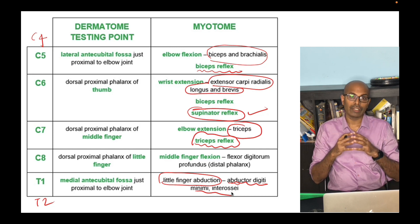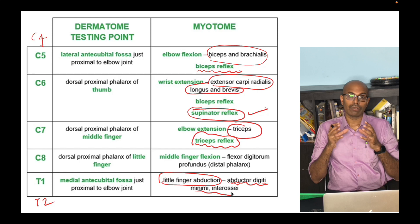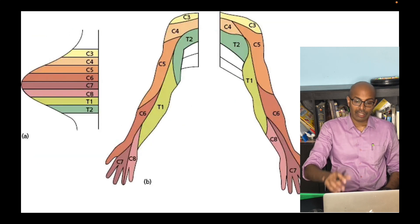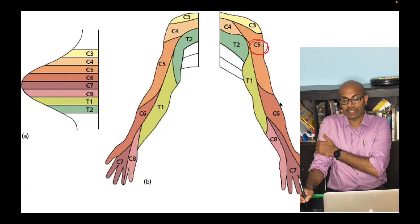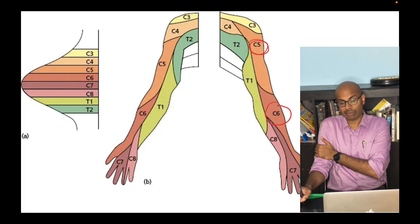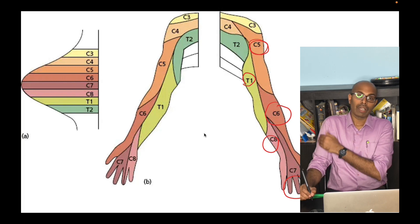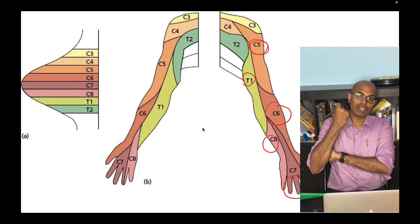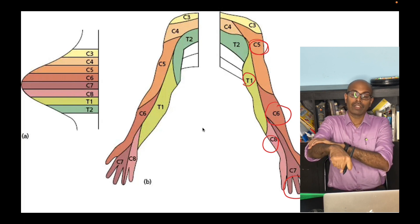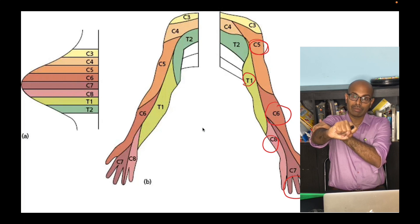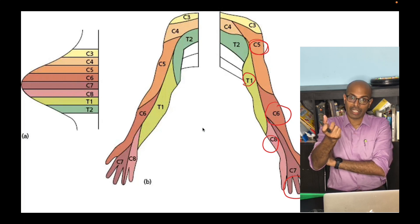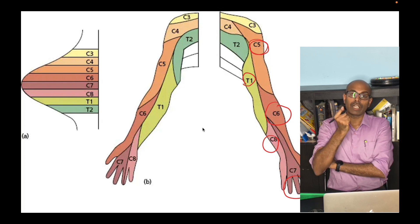To briefly recap the dermatomal involvement: C5 is the lateral upper arm, C6 is the lateral forearm and thumb, C7 is the middle finger, C8 is the medial forearm and little finger, and T1 is the medial arm. For myotomal involvement: C5 — elbow flexion and biceps reflex; C6 — wrist extension and supinator reflex; C7 — elbow extension and triceps reflex; C8 — middle finger flexion; T1 — little finger abduction.